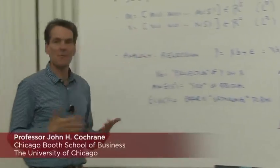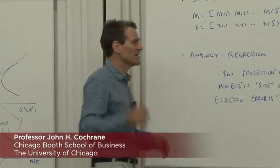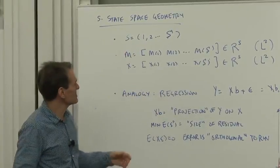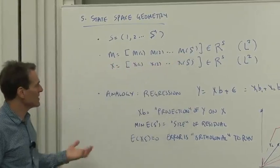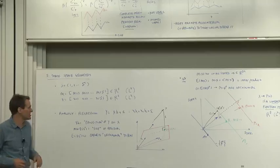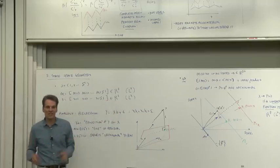So next I'd like to introduce a geometric representation of the same ideas that I find very convenient for keeping things straight. We're thinking about states 1 to s, so the listing of all the things that the discount factor could be in each state, or the listing of all the values that the payoff could be in each state, we can think of those random variables as vectors in RS.